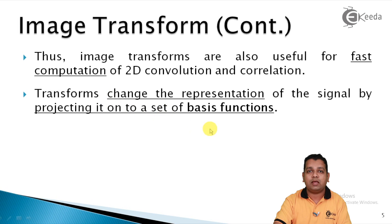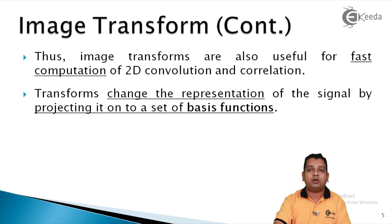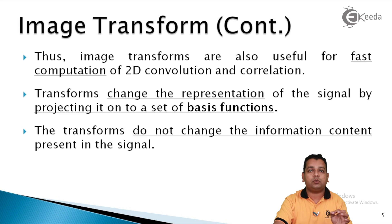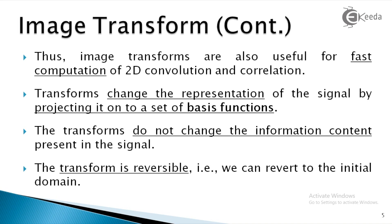Every image transform has its particular basis function of a different type, offering some advantages and some limitations, but we can select the proper image transform based on the application. Transforms do not change the information content in the signal — the question of losing quality or information is not there. It simply switches from one domain to another. The transform is also reversible: if you want the representation back to the original domain — time domain or spatial domain — you can switch back with the help of the inverse transform.